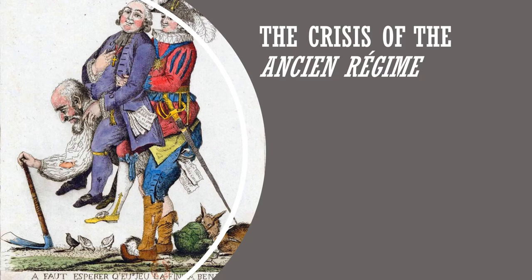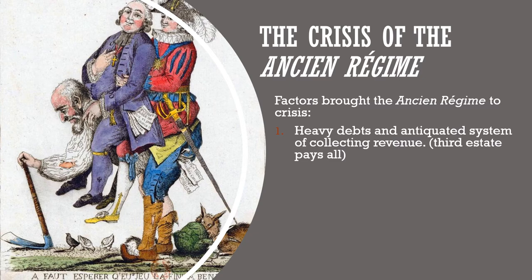So what was the straw that broke the camel's back — what brought the ancien régime, the old regime, into crisis? Several factors. First, heavy debts: France had borrowed enormously to support the American Revolution, and kings since Louis XIV had borrowed to fund wars and build palaces like Versailles. Second, a deeply unfair tax system: the wealthy nobility and clergy paid no tax at all, leaving the entire burden on the Third Estate — an unsustainable situation given the level of debt.